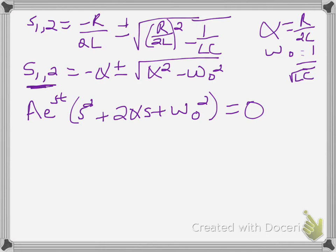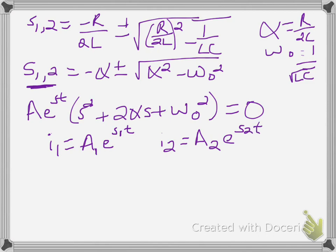This means I'm going to get two solutions for my current I. I1 is some constant A1 times e^(S1·t), where S1 uses the plus sign. I2 is A2 times e^(S2·t), where S2 uses the minus sign. There are several cases for how this will plug into the general equation based on what alpha and omega-naught are.